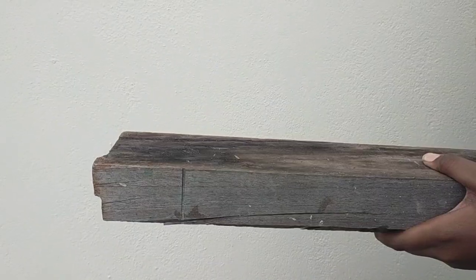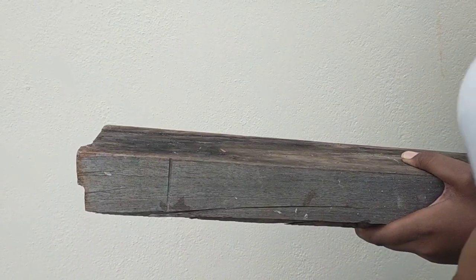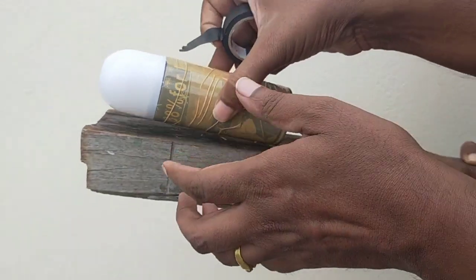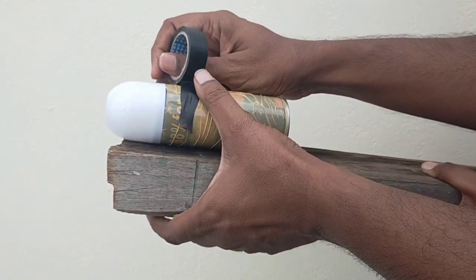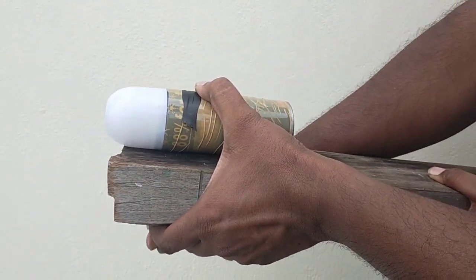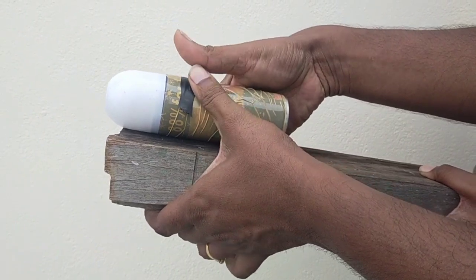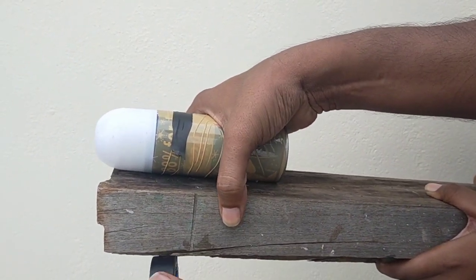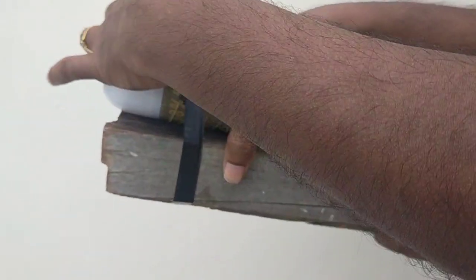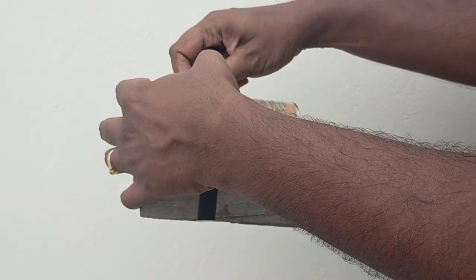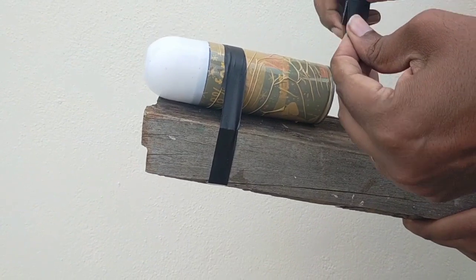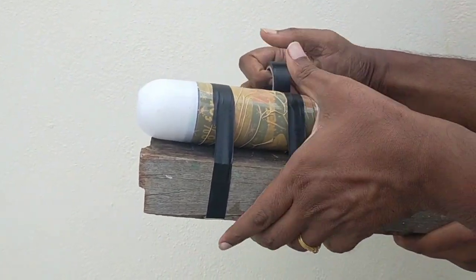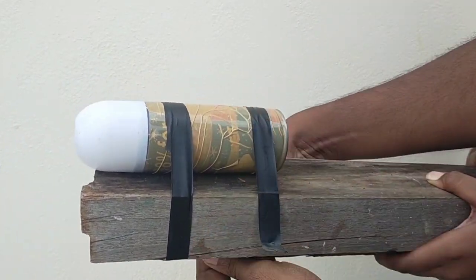Now what we will do is we will just tie this can to this small piece of log so that when we shoot it doesn't fly away, so it stays and every frame is captured in the camera. This is first time I am testing with this snow spray so let us make it a firm grip so that it doesn't move.